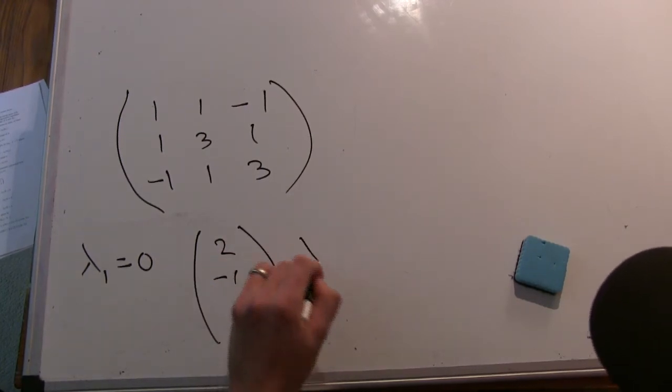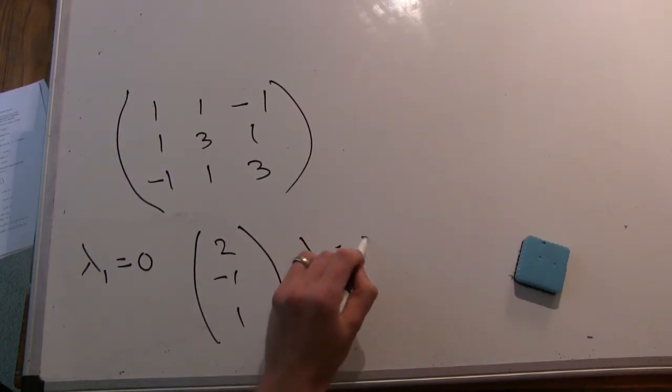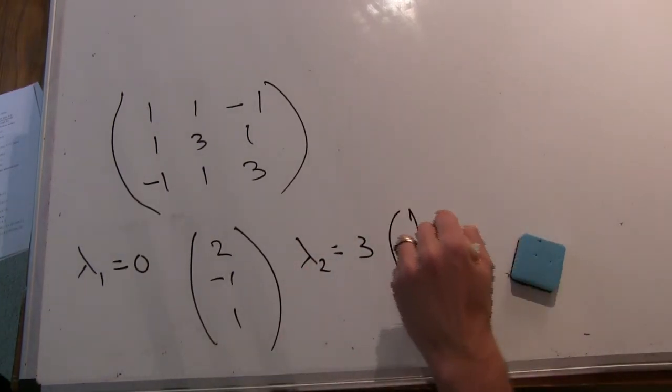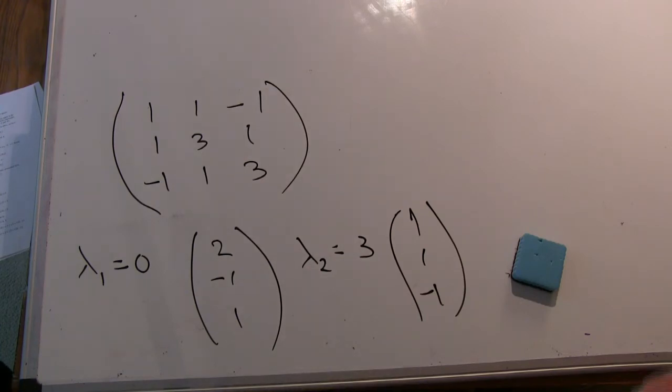And what was lambda 2? It was 3. And then the vector was 1, 1, minus 1. The eigenvector here was 1, 1, minus 1. How am I doing on room here?